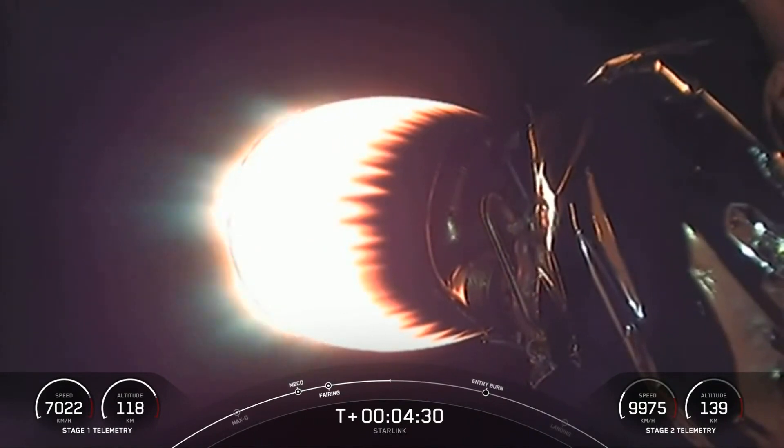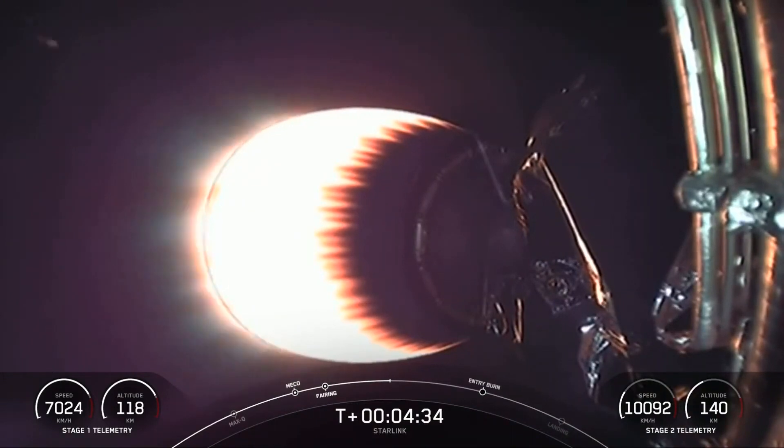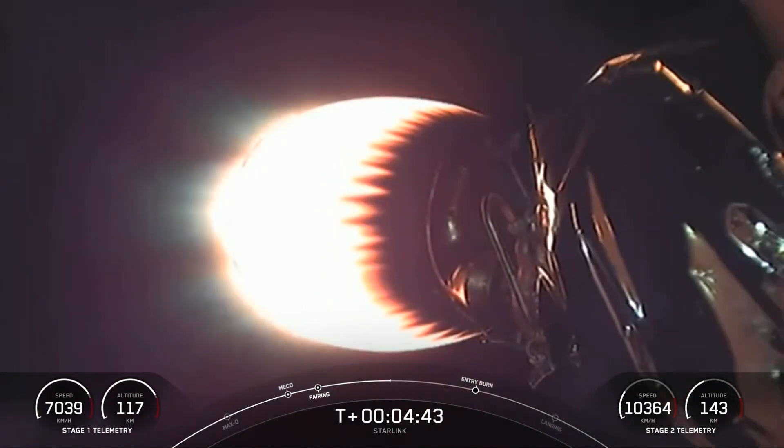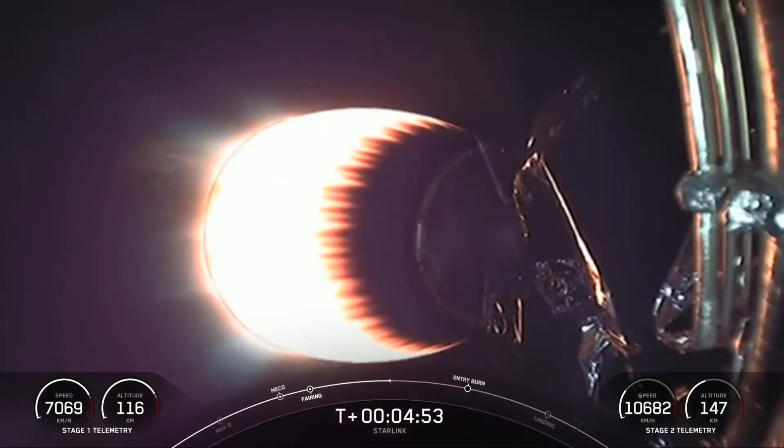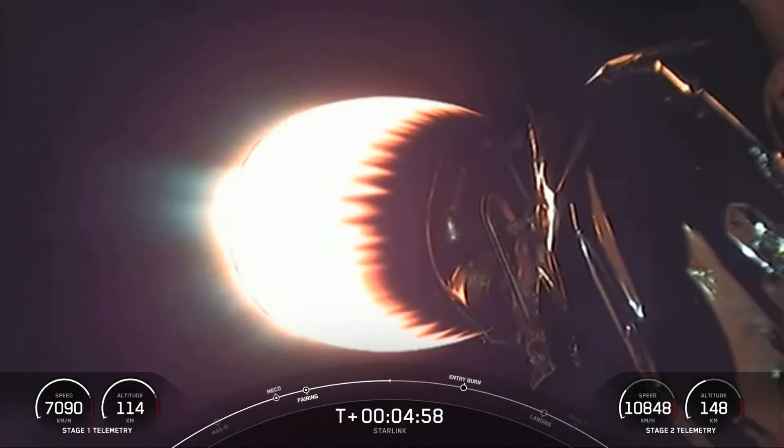Acquisition of signal Bermuda. You can see in that video there that our second stage is looking good. Its nozzle is glowing from that burn that it's currently in. Our second stage is carrying our 60 Starlink satellites to LEO or low Earth orbit. That's about 550 kilometers above the surface of the Earth.